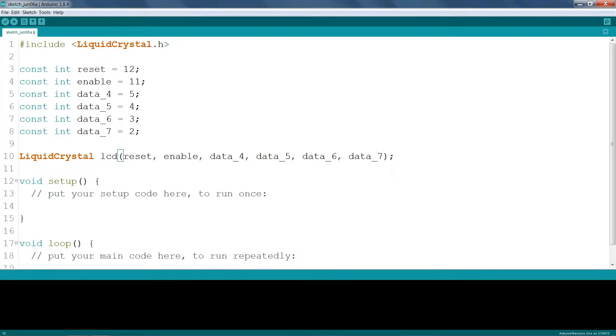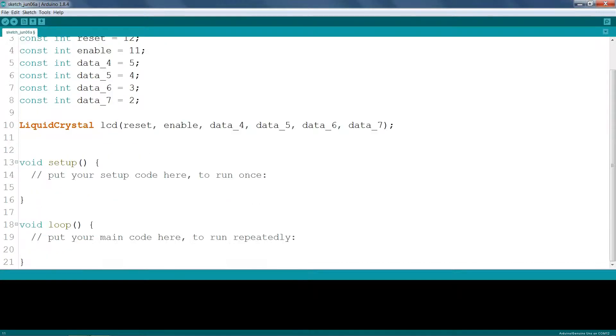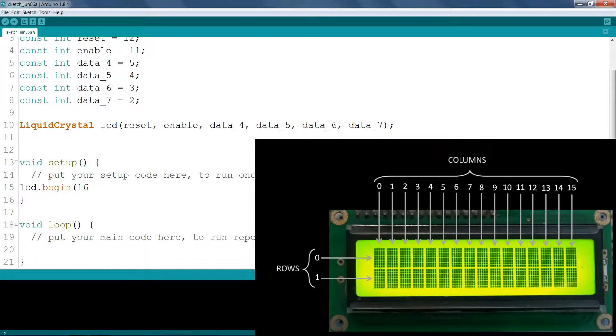Now in the setup section set up the LCD's number of columns and rows. This type of display comes in different sizes like 16x4 or 16x2. The one we are using here has 16 columns and 2 rows. Note that the numbering of the columns and rows starts from 0.